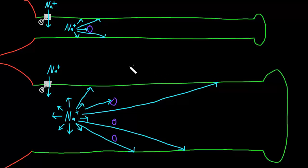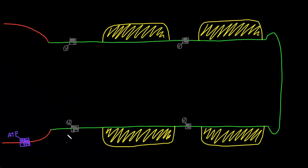But now let's consider the other thing that really speeds up the conduction of action potentials down axons, which is the presence of a myelin sheath around the axon. The speed of action potential conduction is faster in myelinated axons — like I've drawn here with the myelin sheath in yellow — because the capacitance of the membrane is reduced in the myelinated segments, which decreases the number of ions and the time needed to change the membrane potential in these areas.